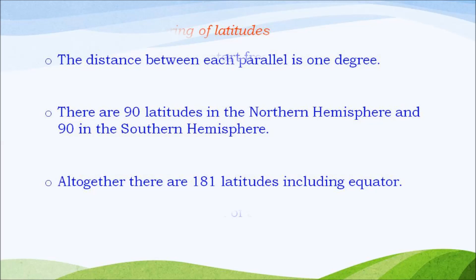The distance between each parallel is 1 degree. There are 90 latitudes in the northern hemisphere and 90 in the southern hemisphere. Altogether there are 181 latitudes including equator.